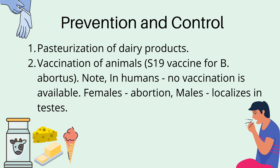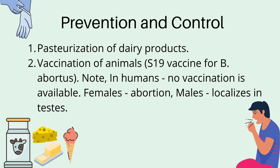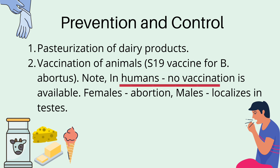The bacteria may be excreted through the milk, therefore proper pasteurization of dairy products is very essential for prevention and control. Pasteurization is heating milk to 72 degrees Celsius for 15 seconds or 63 degrees Celsius for 30 minutes to kill all pathogens. Vaccination of animals against Brucella abortus is through the S19 vaccine. However, no vaccination is available for humans — so if a human female gets infected with Brucella, it will cause abortion, whereas if a male human is infected, it gets localized in the testis permanently.